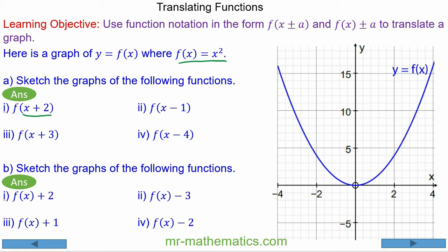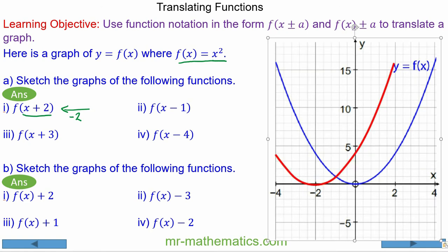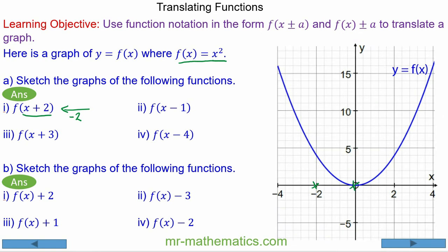This means a horizontal translation in the negative direction by minus 2 units, so the turning point will be translated from the origin — the root is now at negative 2, as you can see.